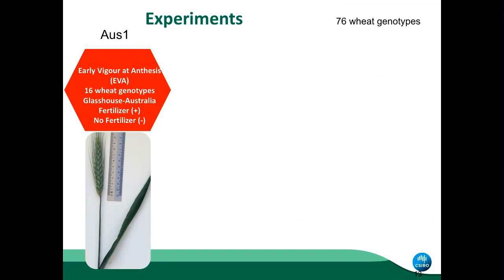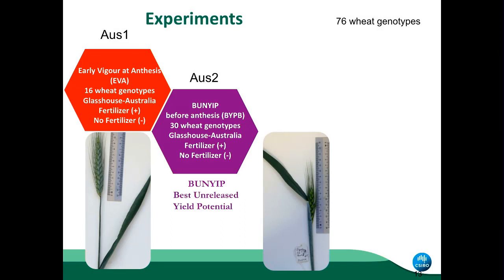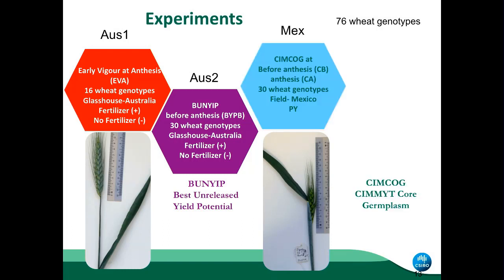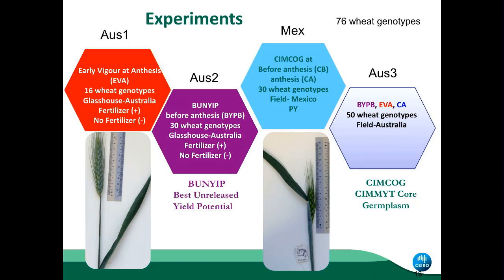For this, we measured in four experiments. The first was a set of 16 genotypes in the glasshouse, with different nitrogen levels to create a large variation in nitrogen for reflectance. The next experiment used another collection of genotypes with different nitrogen levels — less extreme than the first — because we wanted to see if reflectance could detect subtle differences. Then in Mexico, in a collaboration with CIMMYT, we measured genotypes for high yield potential, before and after anthesis. And the last experiment was in Australia in the field, using all three sets of genotypes.